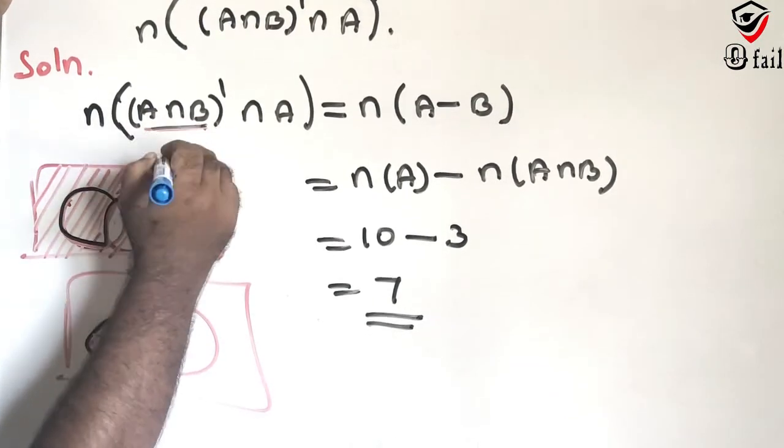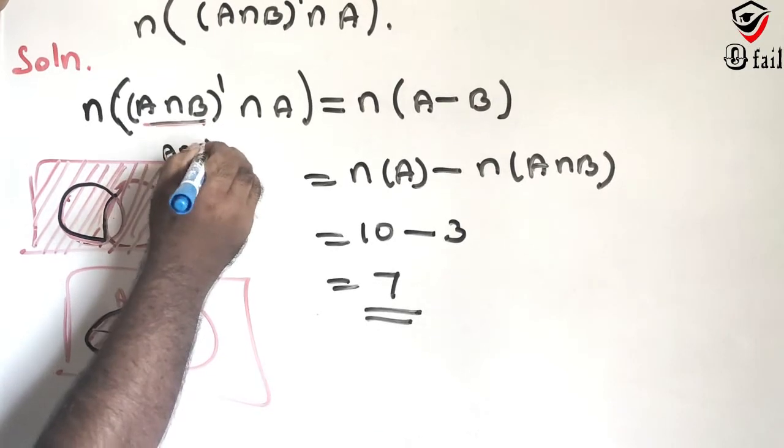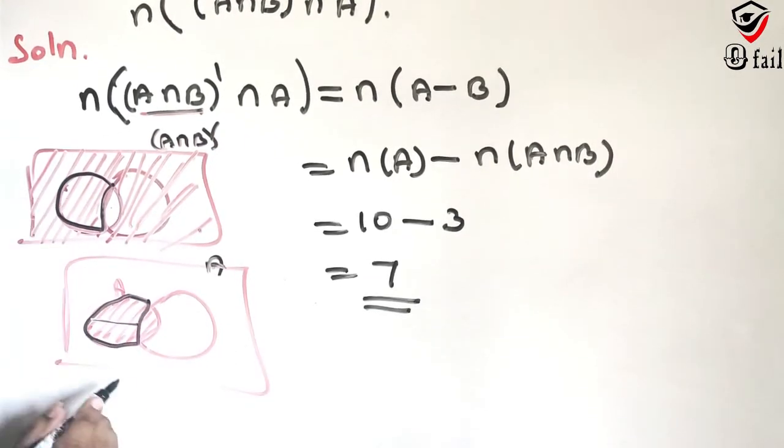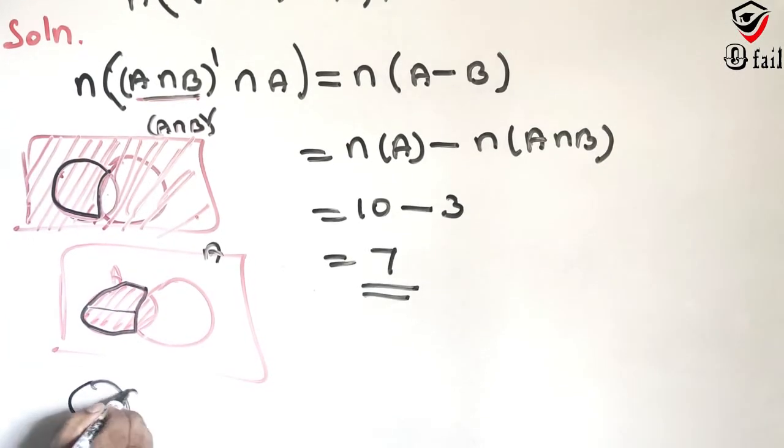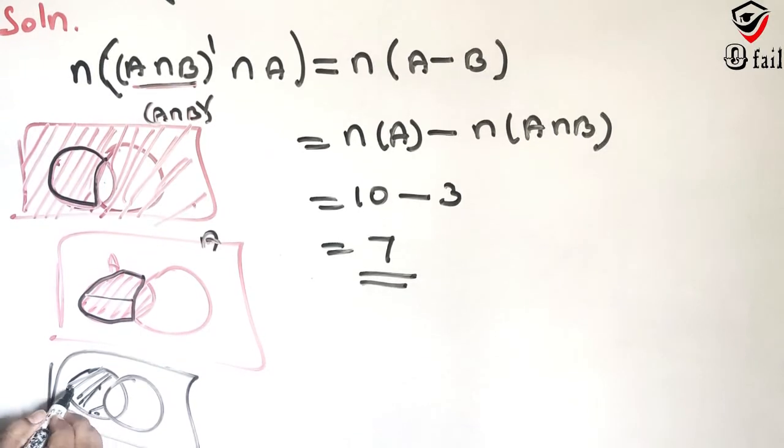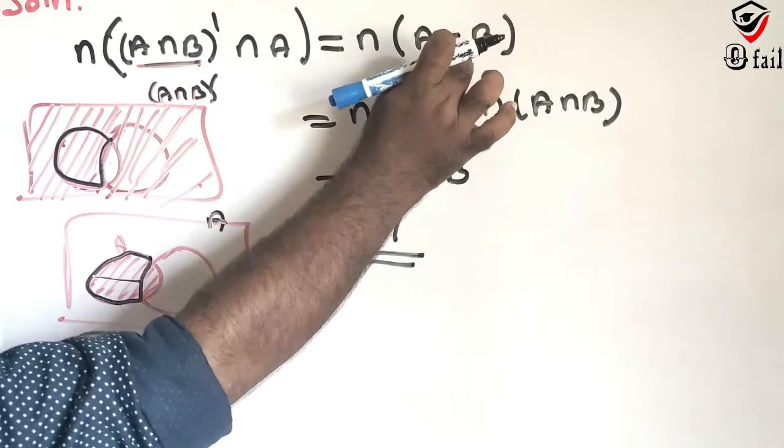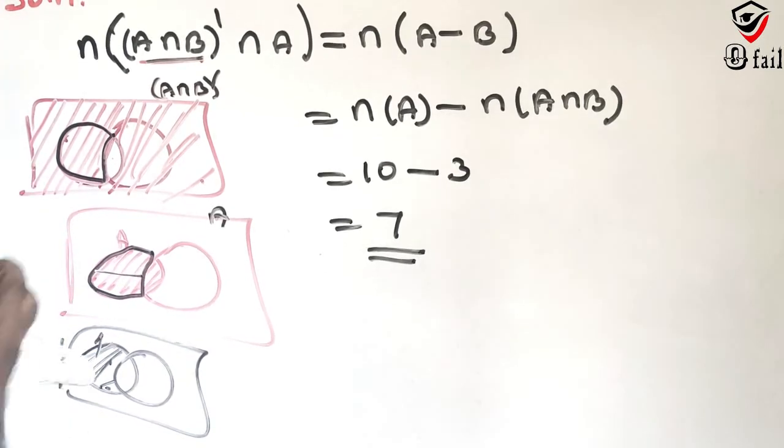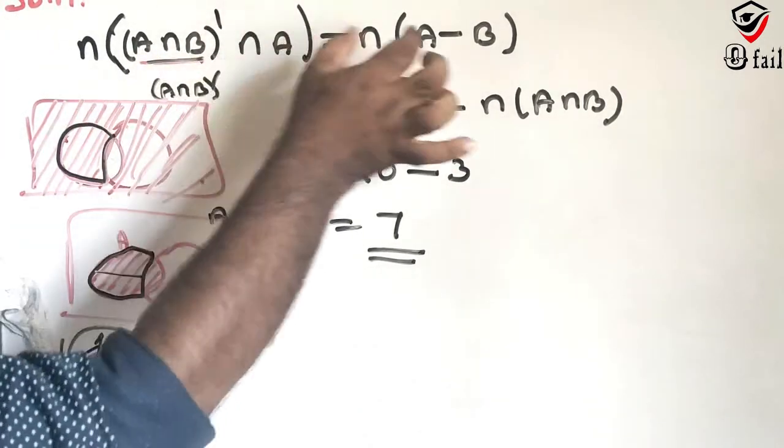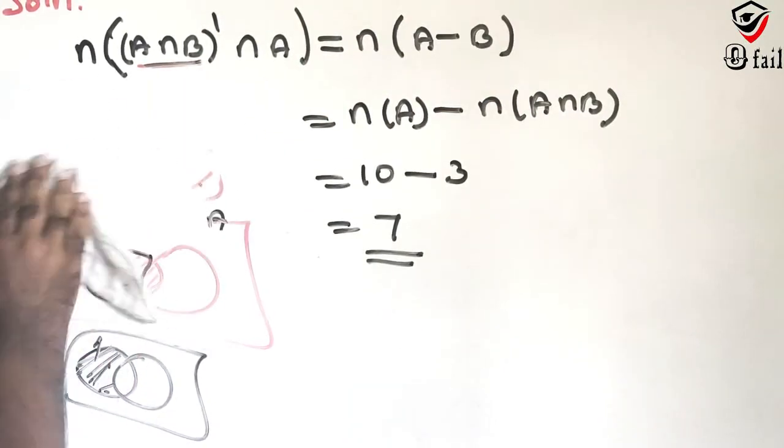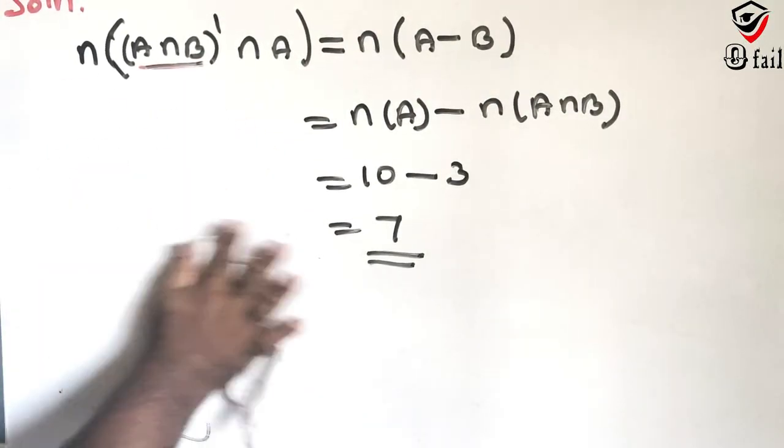This diagram is the first diagram: A intersection B whole dash. This diagram is only A. These two are common. This is A difference. If you look like this, this is 3. This is the diagram. This is equal. So this is easy, this is 3. Number 1. Okay, thank you students.